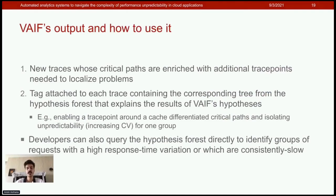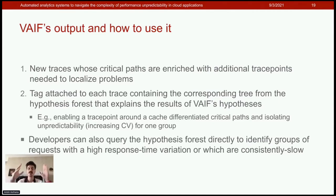VAIF has two outputs. The first is enriched traces whose critical paths include the additional trace points needed to localize problems — during a problem, a developer will find the relevant trace points already present. The second output is a tag attached to each trace containing the corresponding hypothesis tree, which explains VAIF's decisions — for example, showing that enabling a trace point around the cache differentiated critical paths, generating two new groups, increasing predictability for one and isolating unpredictability for the other.